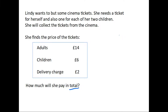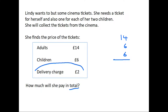Lindy, as an adult, is going to pay £14 for her ticket. She has two children, so £6 for one child and £6 for the other. Now, we have information saying there is a £2 delivery charge — don't be tempted to add that on, because if you read the question, she's going to collect the tickets from the cinema, so they're not going to be delivered. Quite often there can be things in questions that you do not need to include.